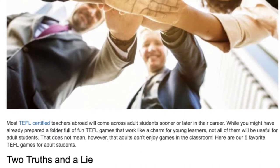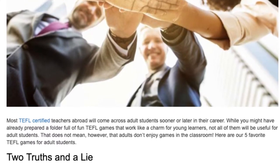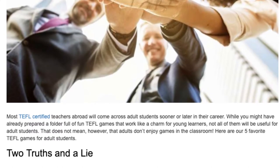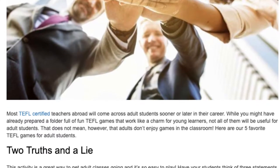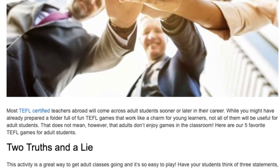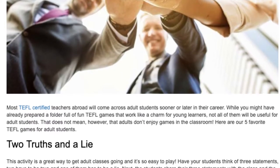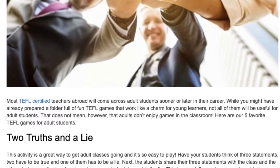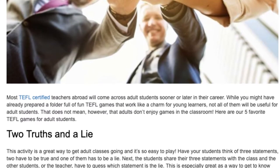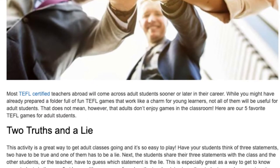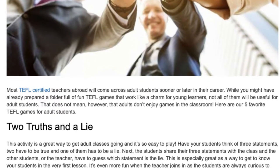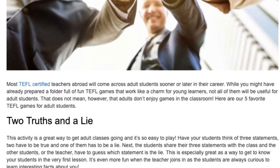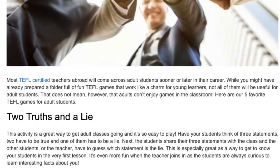Two Truths and a Lie. This activity is a great way to get adult classes going and it's so easy to play. Have your students think of three statements — two have to be true and one of them has to be a lie. Next, the students share their three statements with the class and the other students or the teacher have to guess which statement is the lie.